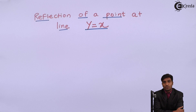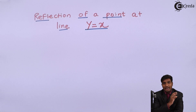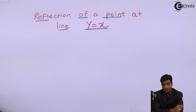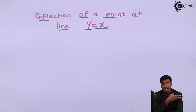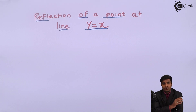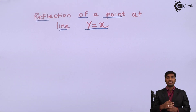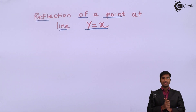Here we are not going to take reflection at any standard axis or origin. We are just taking reflection at the line y is equal to x. This means we are drawing a line which is passing through the origin at an angle of 45 degrees, and the value of x and y is the same.